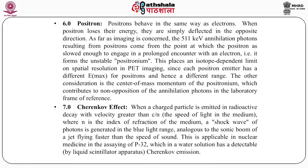Positrons behave in the same way as electrons. When positrons lose their energy, they are deflected in the opposite direction. As far as imaging is concerned, the 511 keV annihilation photons resulting from positron annihilation come from the point at which the positron has slowed enough — forming an unstable positronium with an electron. This places an isotope-dependent limit on spatial resolution in PET imaging, since each positron emitter has a different E_max for the positron and hence a different range. The other consideration is the center-of-mass momentum of the positron, which contributes to non-collinearity of the annihilation photons in the laboratory frame of reference.